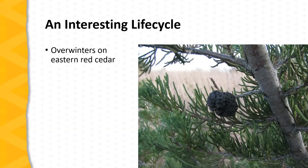It has a very interesting life cycle. It hops back and forth from one host to the other, and the start of the problem for us on our apples and crab apples is the overwintering stage on the eastern red cedar. It's a hard knot, as we see in this picture here, usually found on one of the older branches on the cedar or the juniper.